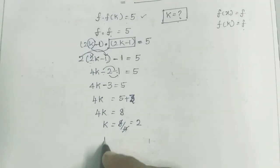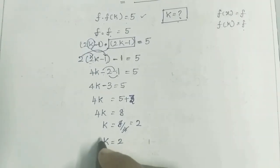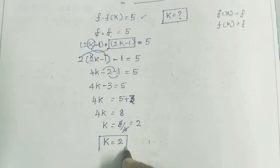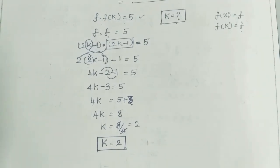So the value of k is 2. That's all — the value of k is equal to 2.